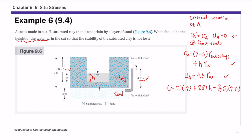At the limiting state, this effective stress equals zero. Solving for small h, you will get h equals 0.63 meters. So that's the height of water inside the cut required to maintain the stability of the clay.